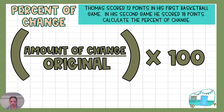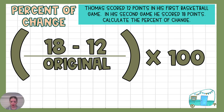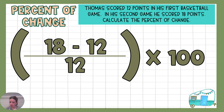Here's our problem. Thomas scored 12 points in that first game and 18 in the second. We're going to calculate the percent of change. Step one is to find the amount of change — what's the difference, how much did his points change? In this case it went from 18 to 12, and then we divide that by the original — the very first points he scored, which in this case is 12.